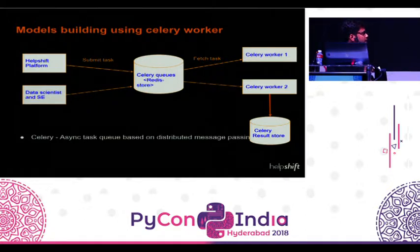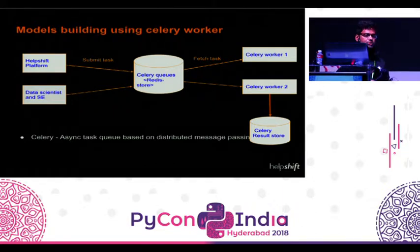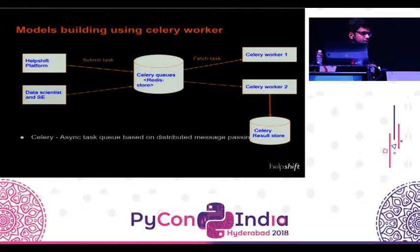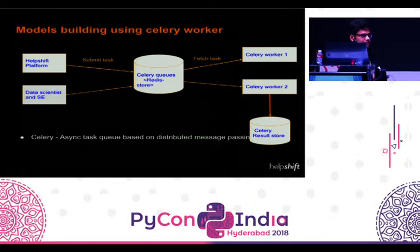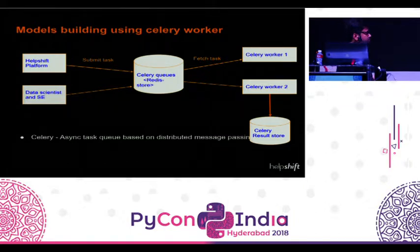This is our architecture diagram for how we use Celery. The HelpShift platform allows data scientists and software engineers to submit model-building tasks to Celery. We define queues according to the model-building task — a particular task is assigned to a particular queue and gets picked up from there. Many workers are registered to queues, pick up tasks from Celery, and build the models. Results and metadata are stored in the results store.